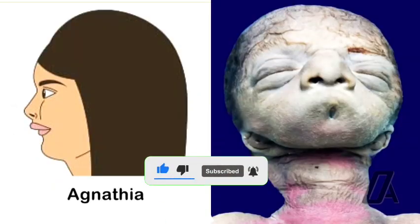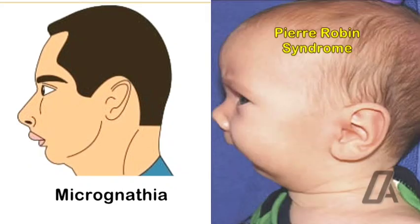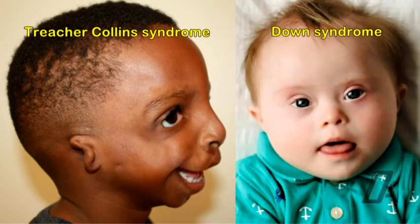The mandible may be absent in some cases. This condition is called agnathia. Macrognathia, a condition of prognathic mandible, is seen in hyperpituitarism. Micrognathia is seen in Pierre-Robin syndrome, defective mandible is seen in Treacher-Collins syndrome, Down syndrome, etc.